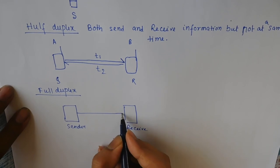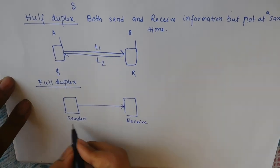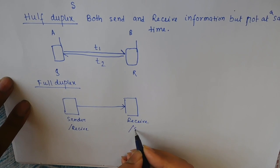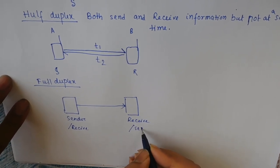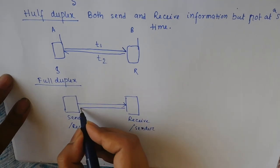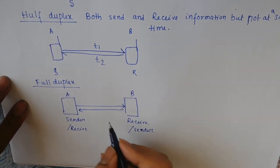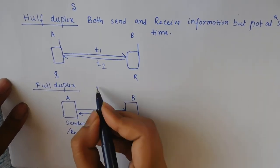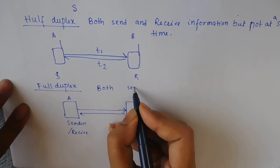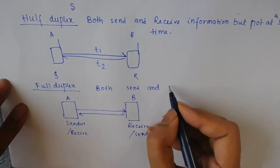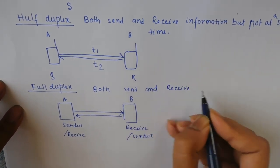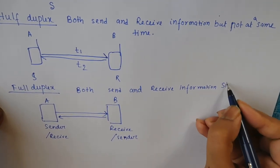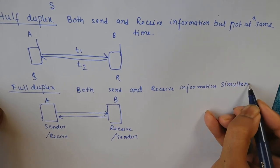For full duplex, both are data communicating devices — the sender can send information and also receive it, and the receiver can also be used as a sender. Both data communicating devices send and receive information simultaneously. Thank you.